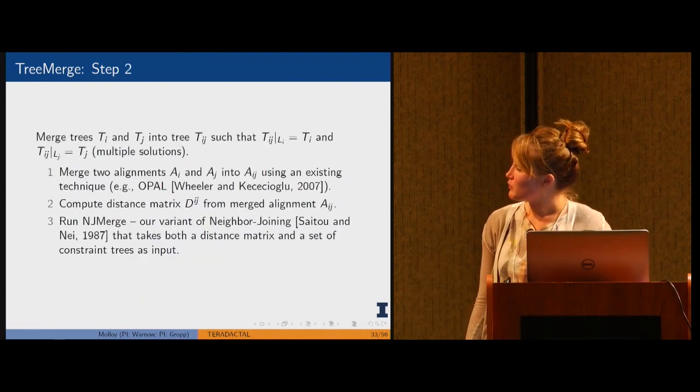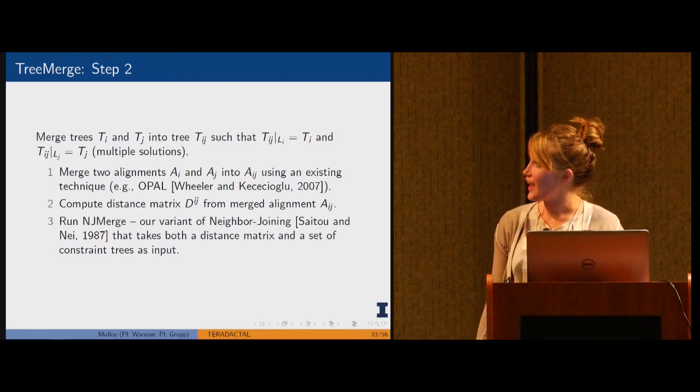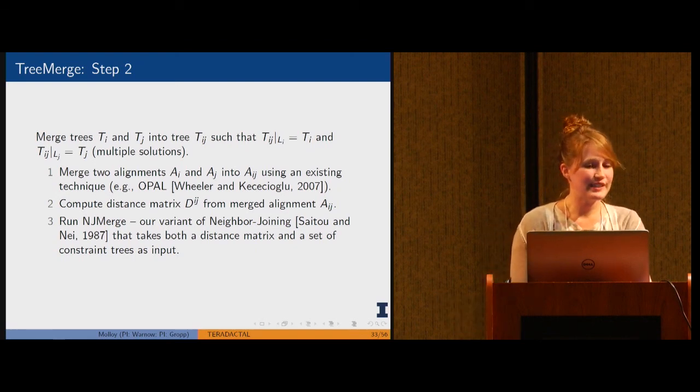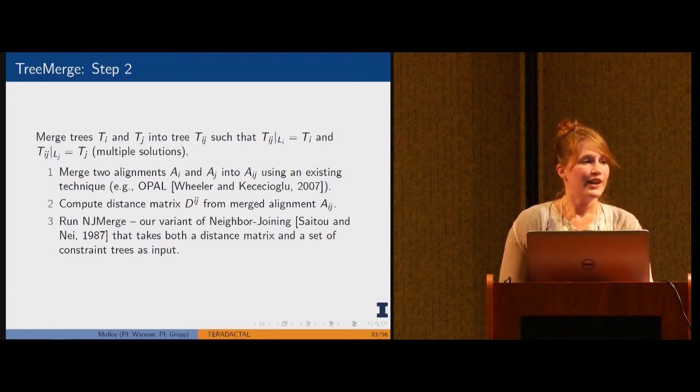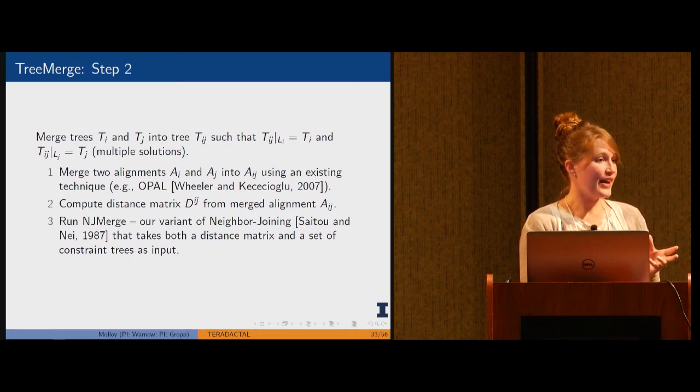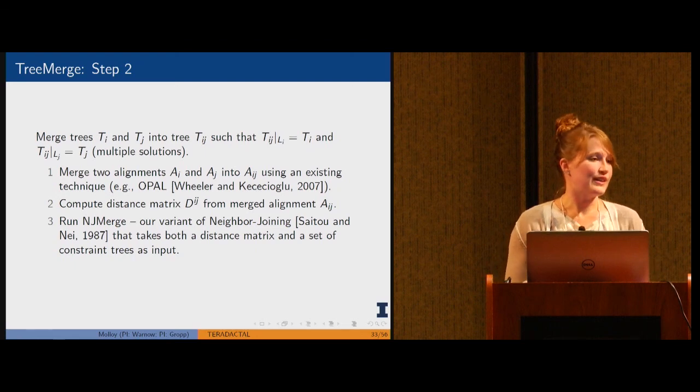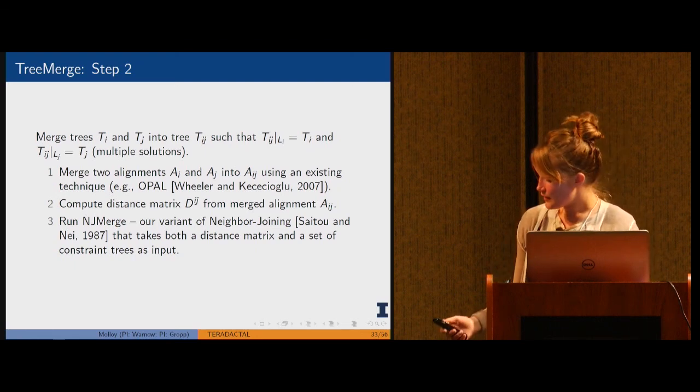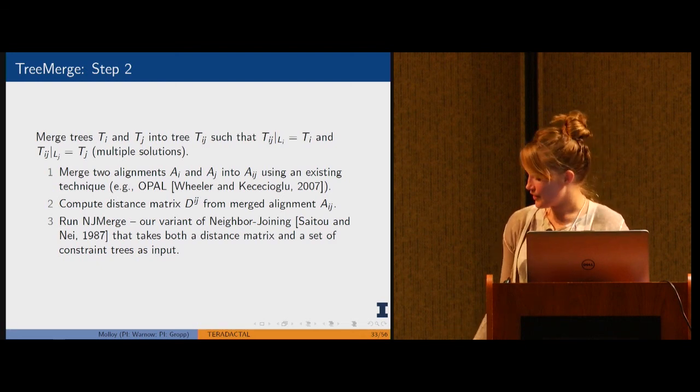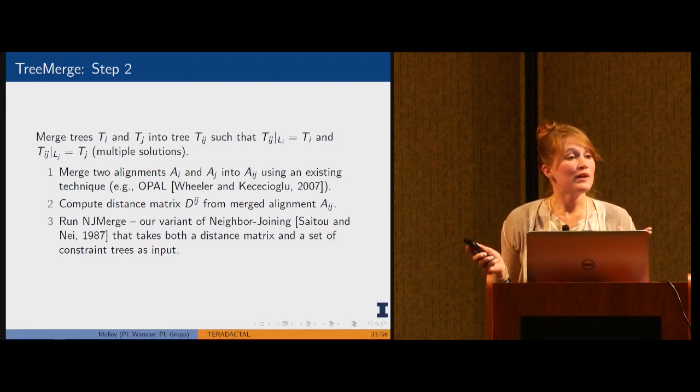Step two is we want to merge along one edge. We have trees Ti and Tj and we want to merge them into tree Tij such that if you take that merged tree and constrain it to the leaves from tree i, you recover tree i, and the same would be true if you constrain Tij to the leaves on just Tj. We do this by merging the two alignments together. There's a lot of existing techniques to do this.